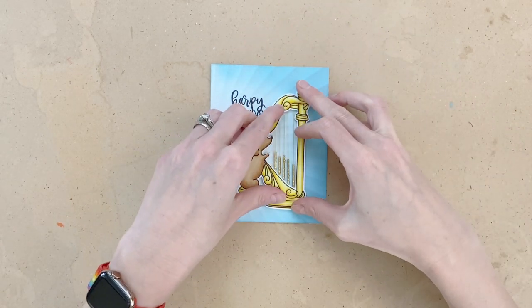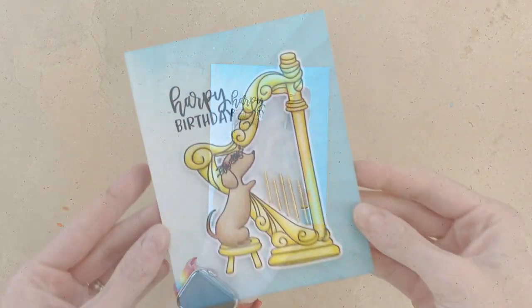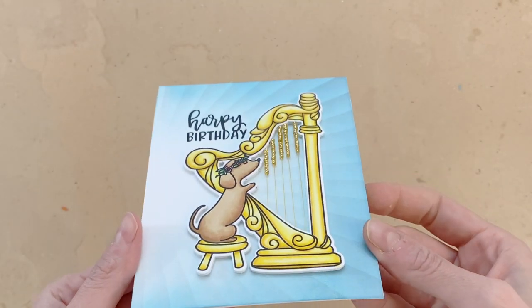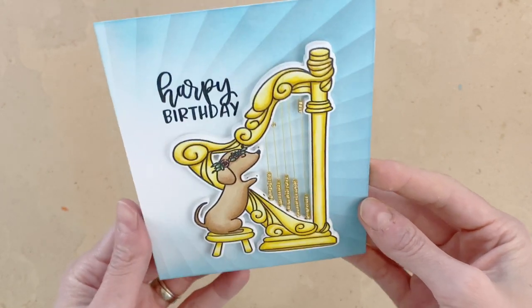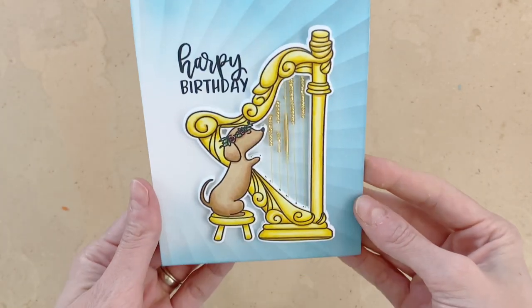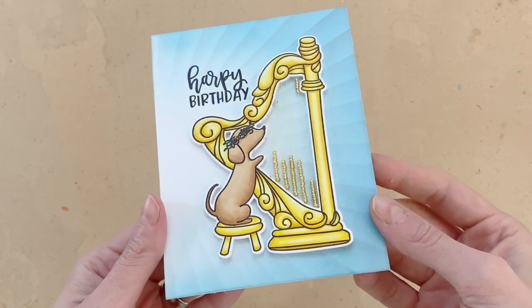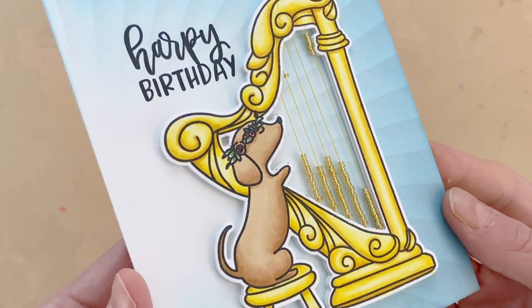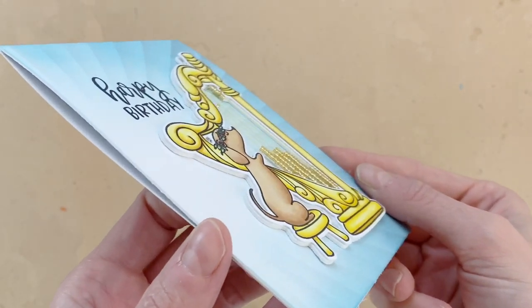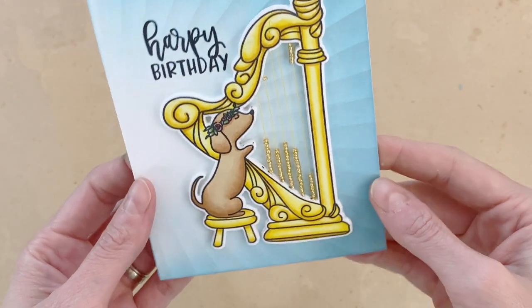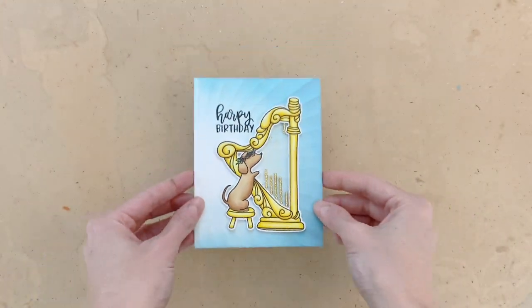I'm going to hold everything just for a second just for a little bit for that glue to set. This tombow mono multi liquid adhesive does that pretty quickly. Here's the finished card and I'll just give it a turn here and as you can see these beads move beautifully on the strings. I think it works really well with this harp image, really fun different kind of interactive card. The techniques that I used here you could really apply to whatever images you have.